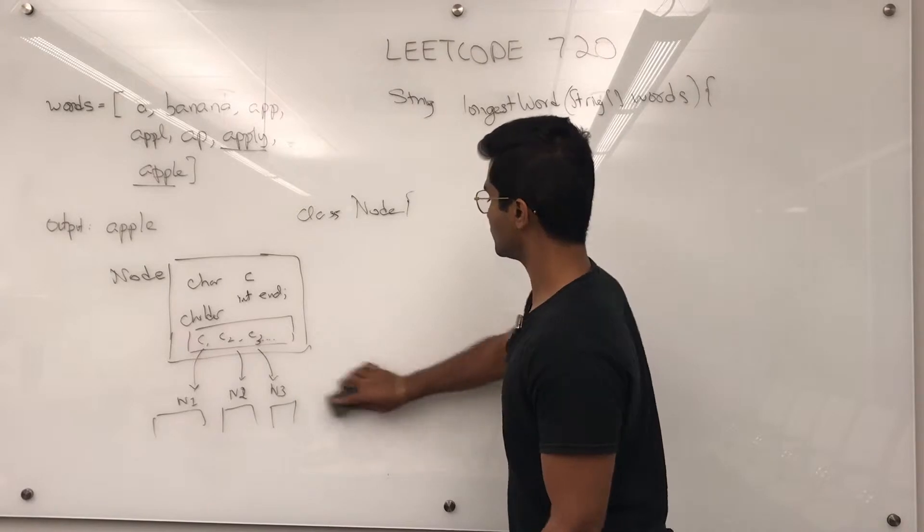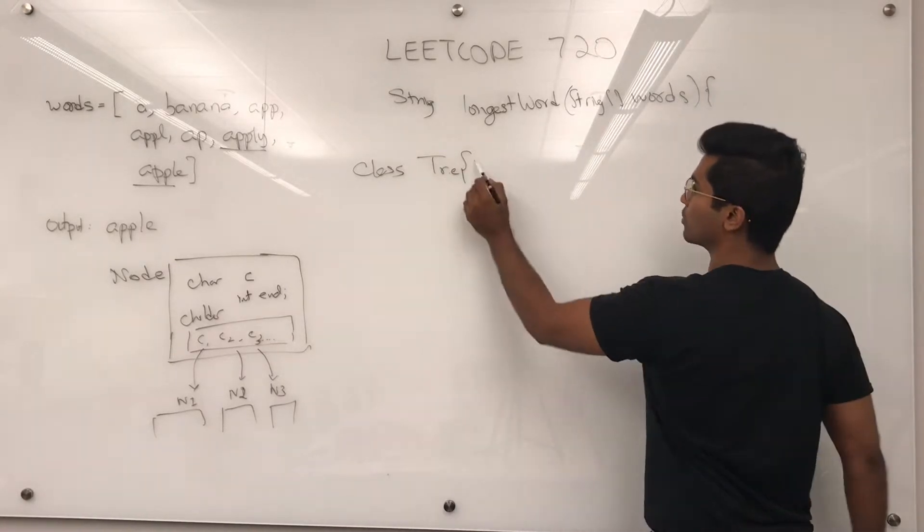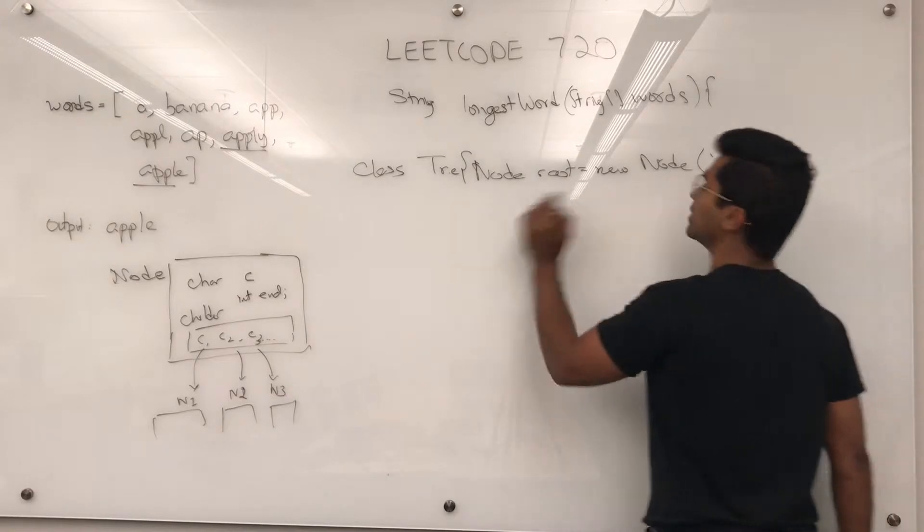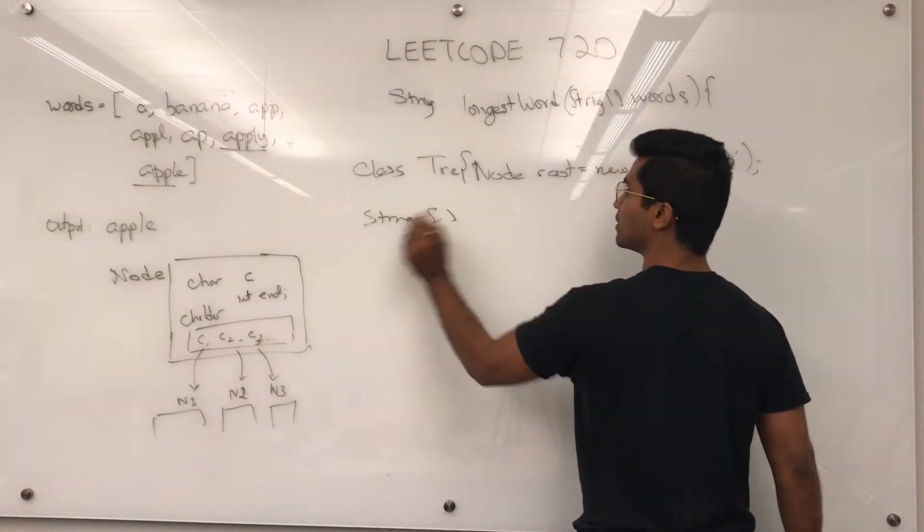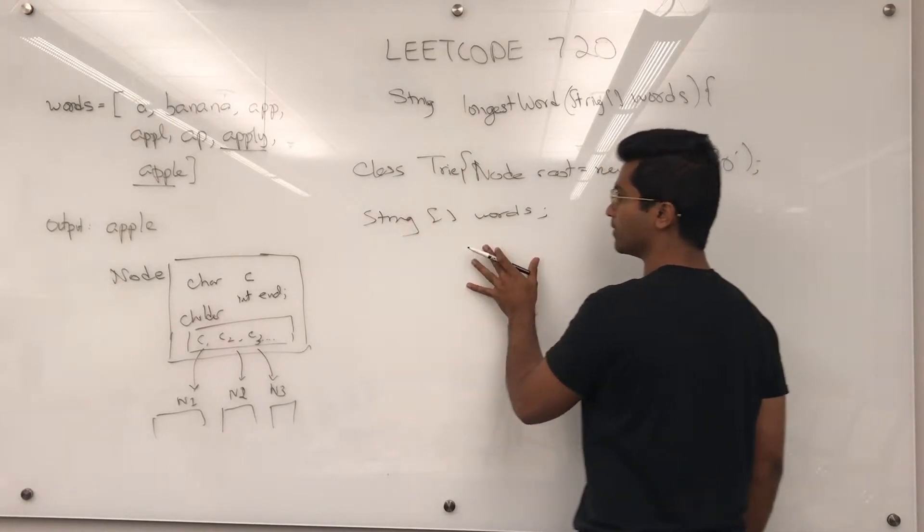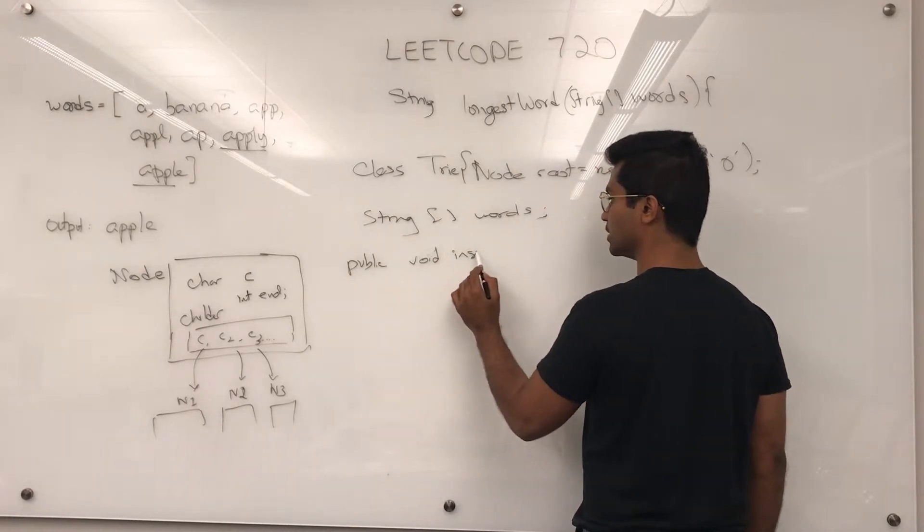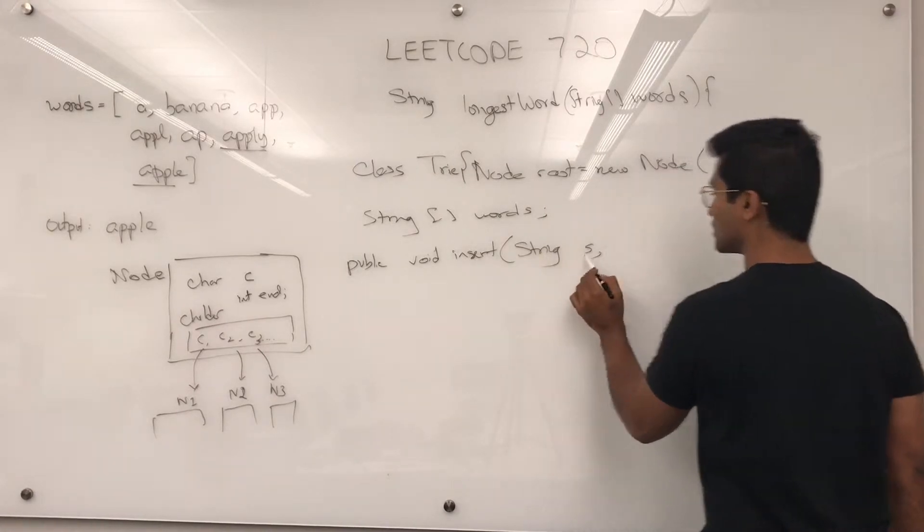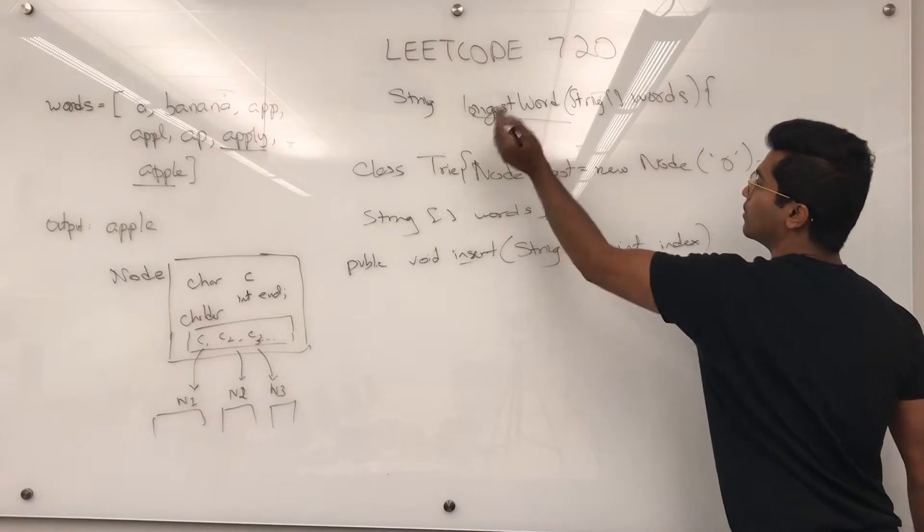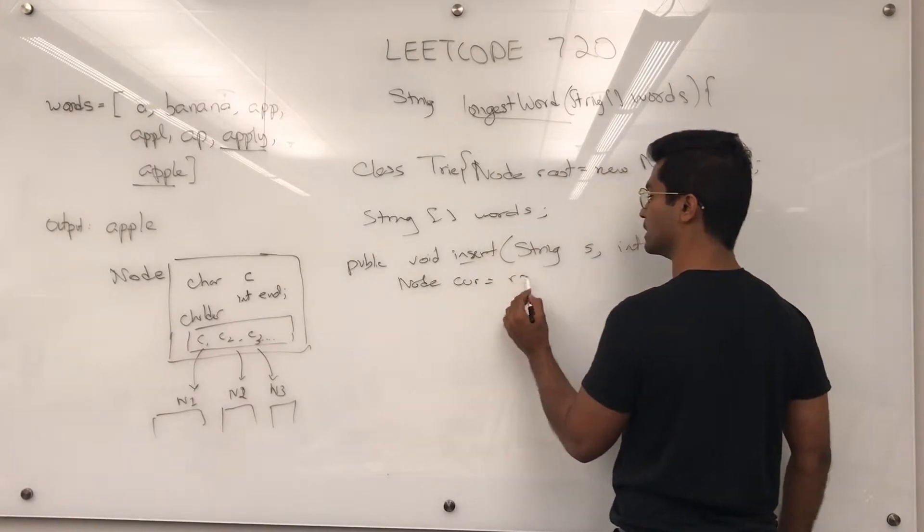So this is the class for the node itself. Now let's write the trie. Class trie. The first thing, it's going to have a dummy node called a root. Node root is new node. The trie is going to hold an array of words. I'll add it later. Then we're going to have an insert. So public void insert string s and the index. This is going to be a node cur, which is like a temporary pointer. It's going to be starting with the root always.